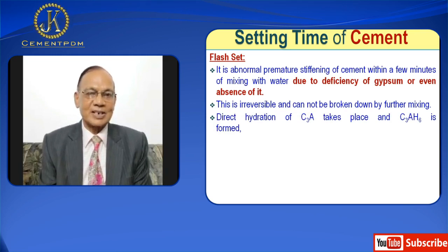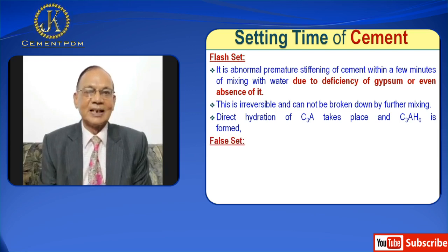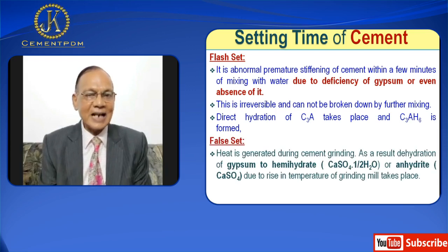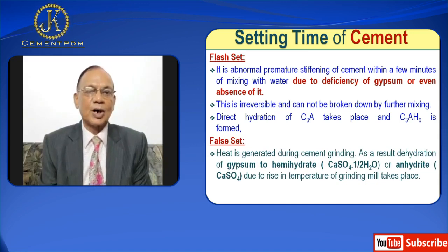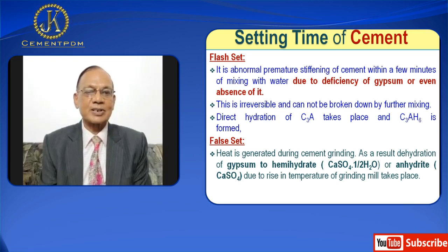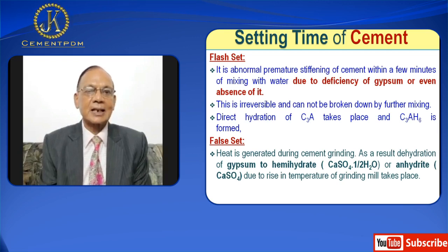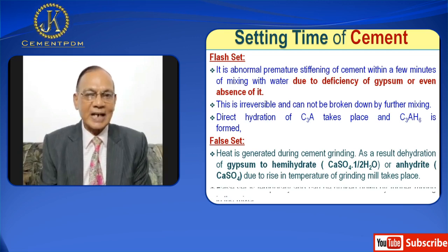Now let us see what is false set. Heat is generated during cement grinding. As a result, dehydration of gypsum to hemihydrate — that is CaSO4·½H2O — or anhydrite CaSO4 occurs due to rise in temperature during grinding. False set is temporary and can be broken down by further mixing.